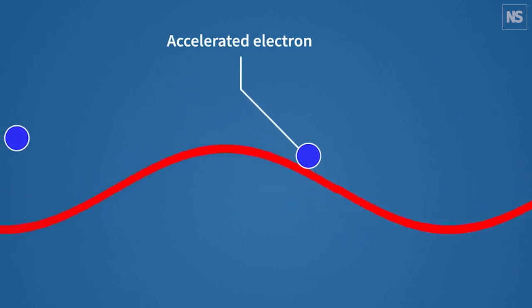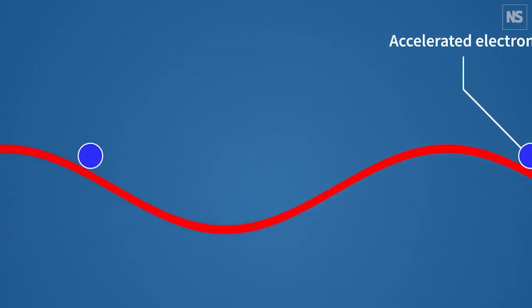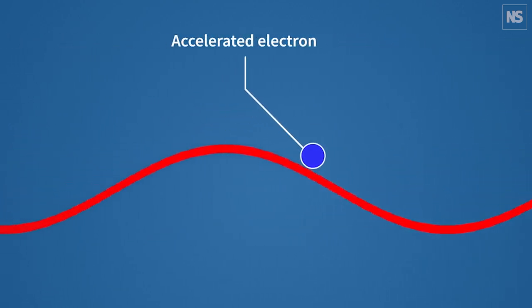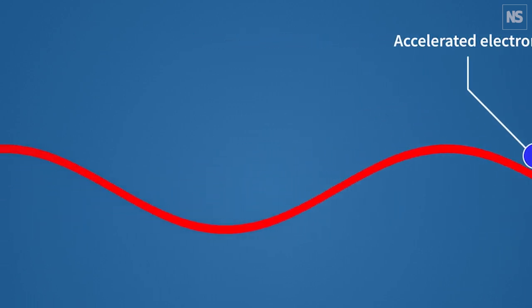The concept of plasma wakefield acceleration can be explained in a very nice picture. You have to imagine you have a lake, and then you have a boat going through this lake. This boat produces wakefields in the back, and then you have some surfers. The surfers jump on these wakefields and get accelerated.